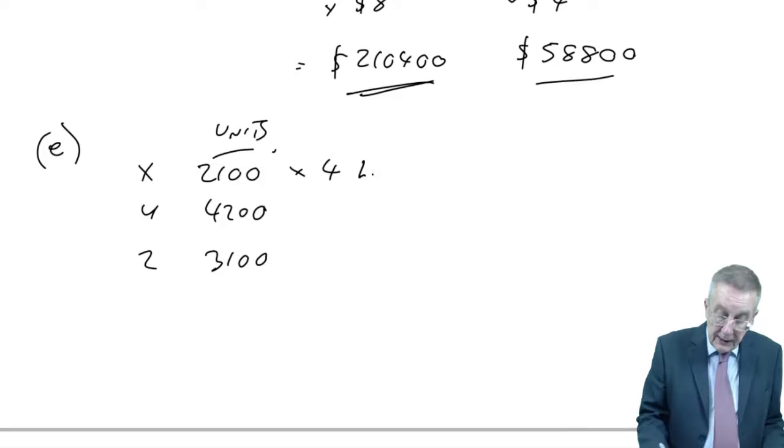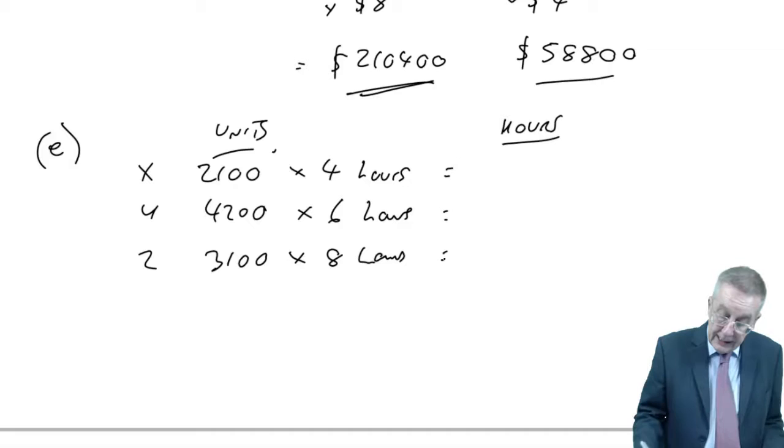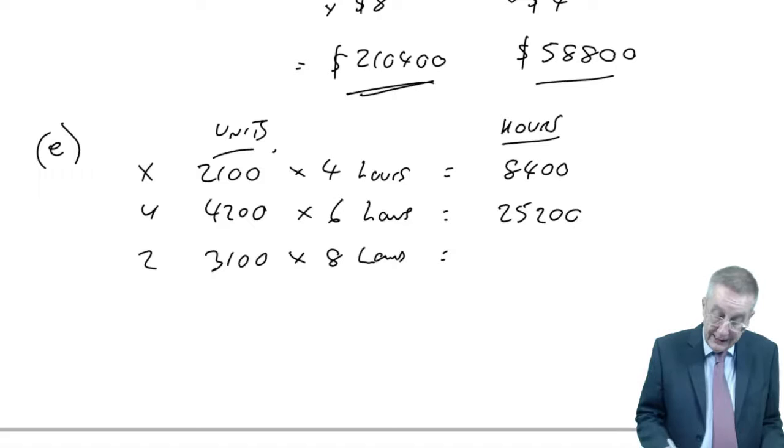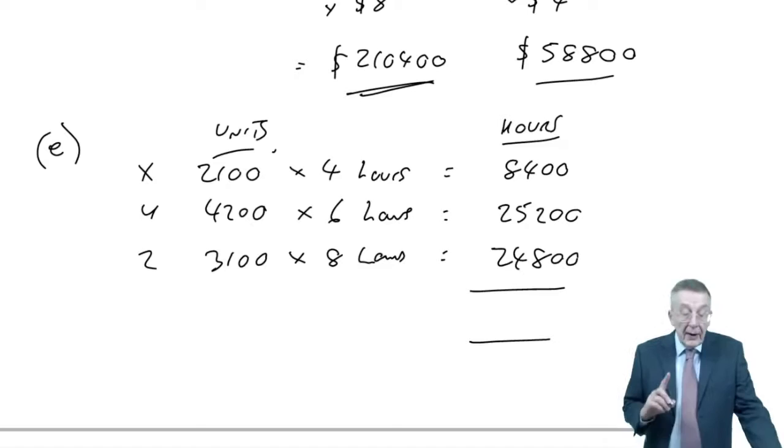How much labour does each unit need? Well, the last table, X, each unit needs 4 hours, Y, 6 hours, Z, 8 hours. 8,400, 25,200, 24,800. And so, the total number of hours we're going to need, I think, 58,400.